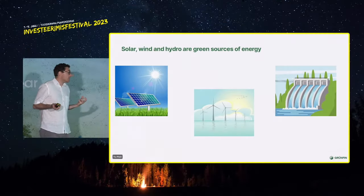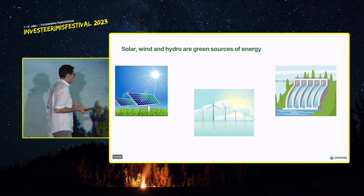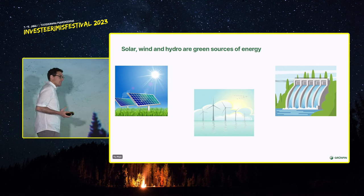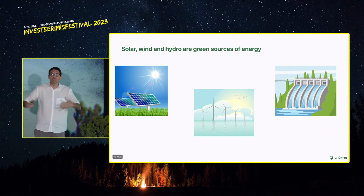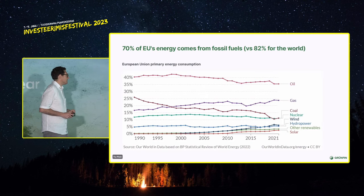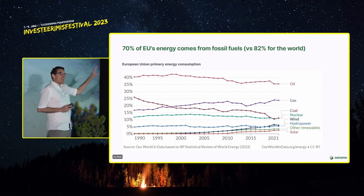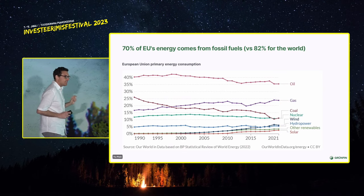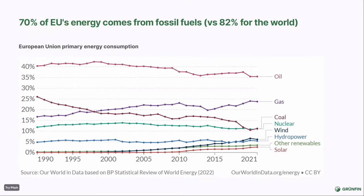We also have green sources of energy — renewable sources: solar, wind, hydro. These are emissions-free at the time of energy production. But we are very far away from using them as much as we can. In Europe today, 70% of our energy still comes from fossil fuels — the top three being oil, gas, and coal. You can see solar, hydro, and wind are still a tiny, tiny amount here in Europe.